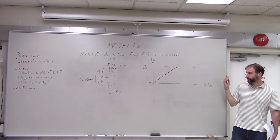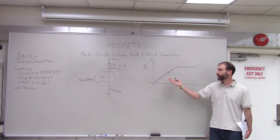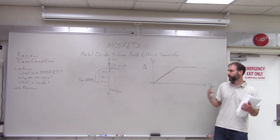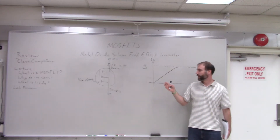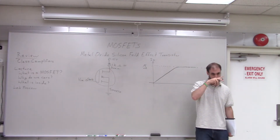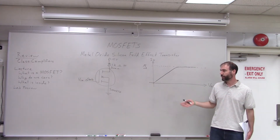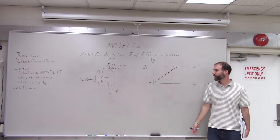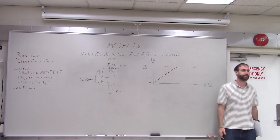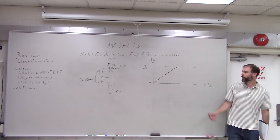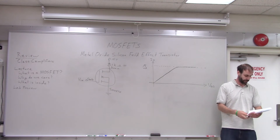Whenever switching over from talking about BJTs to MOSFETs, it always takes a moment to remember whether we're talking about gate-drain-source or emitter-base-collector. So if there's a pause, that's what's being worked through. Any questions about that?